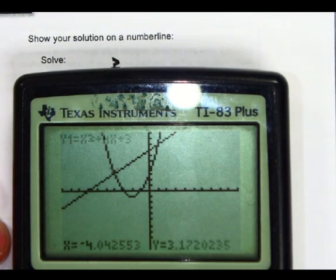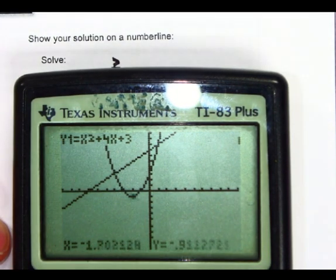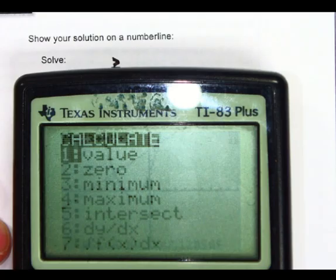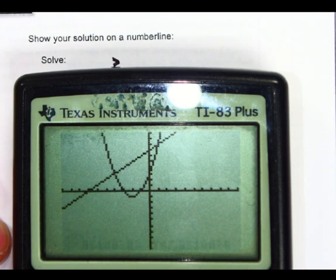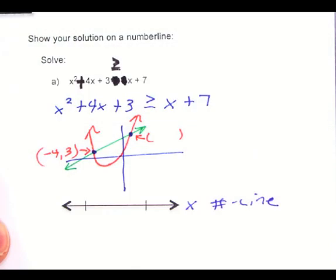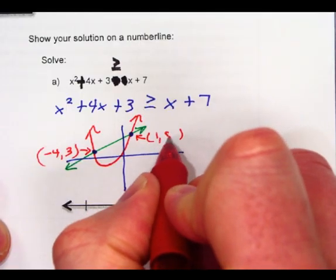If I trace and go over a little bit, so I get this thing going to kind of close to where I want to be. That looks pretty good. Second calc, intersect, and I get 1 comma 8. So 1 comma 8 is the other point of intersection.